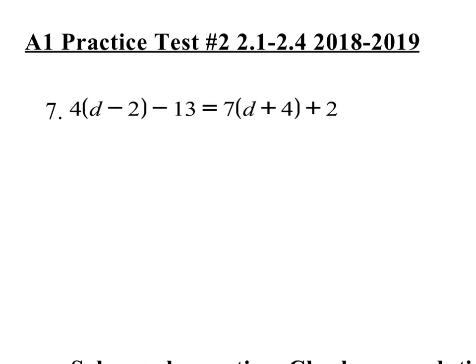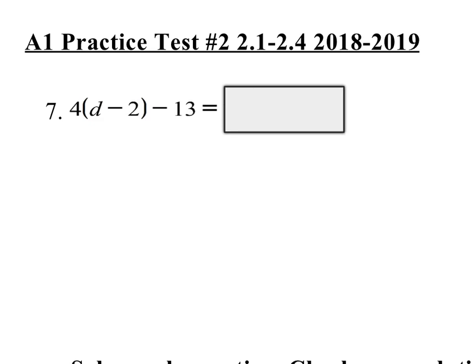Step 1 on solving any equation is to do distributive property and combining like terms, and you want to do one side at a time. So let's cover up the right side and look at the left side. Is there any distributive property there? Absolutely. 4 times d is 4d, and 4 times negative 2 is negative 8. We are going to bring down the minus 13. So I've distributed.